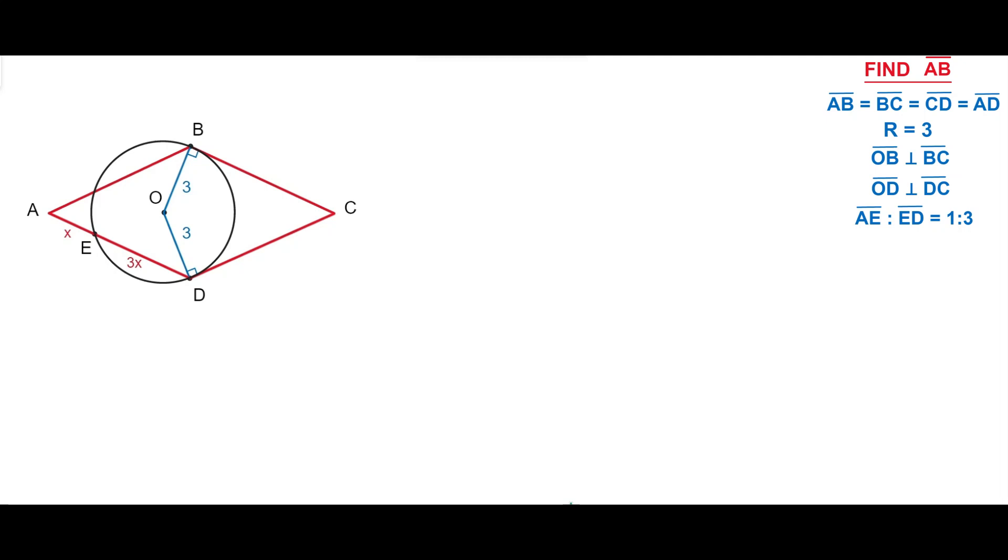Welcome to Geometry Masterclass. In this video we have a rhombus and circle that touches the sides of the rhombus BC and DC and the vertexes B and D. The circle also intersects the side of the rhombus AD.